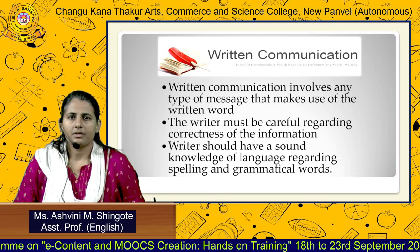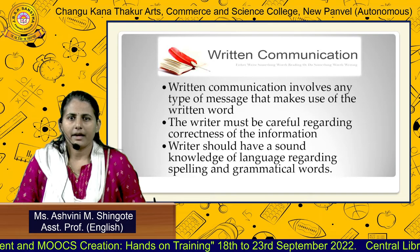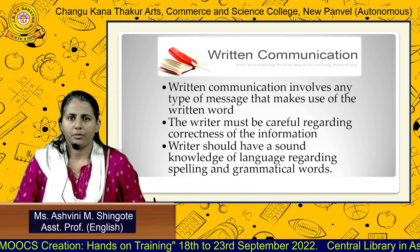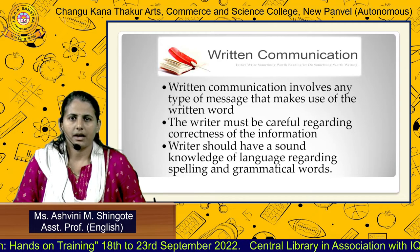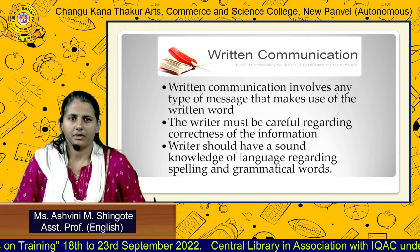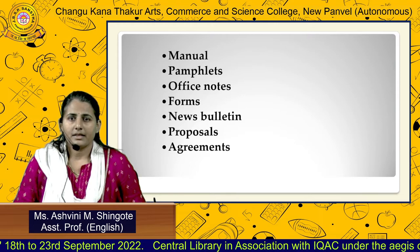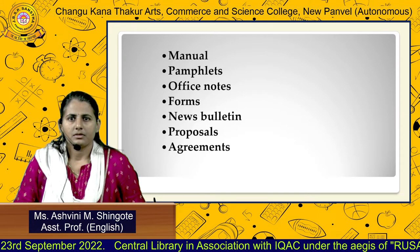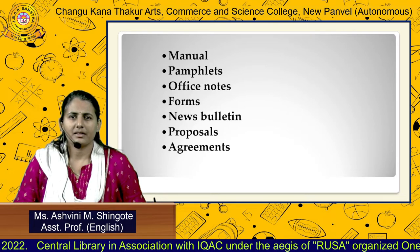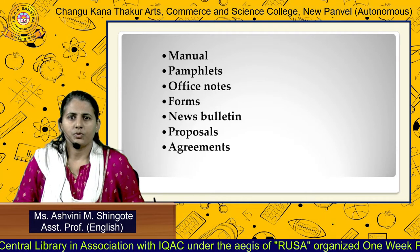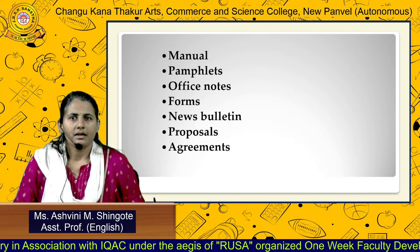The writer must be careful regarding the correctness of the information. The writer should have a sound knowledge of language regarding spellings and grammatical rules. Examples of written communication include manuals, pamphlets, office notes, memos, news bulletins, proposals, and agreements.